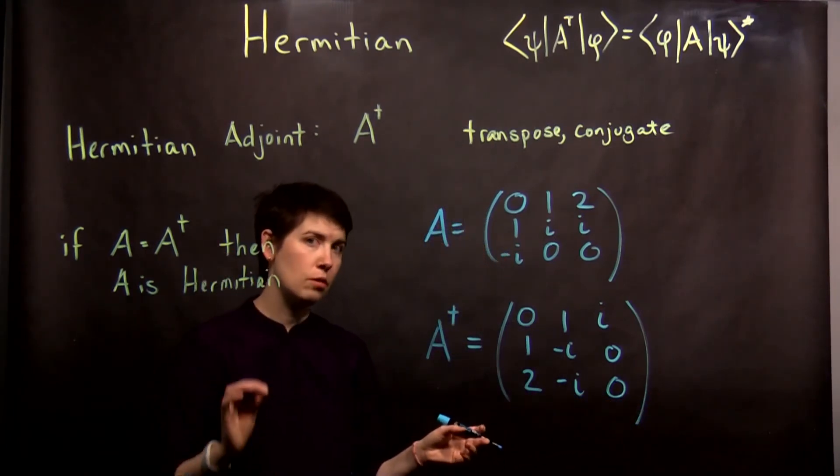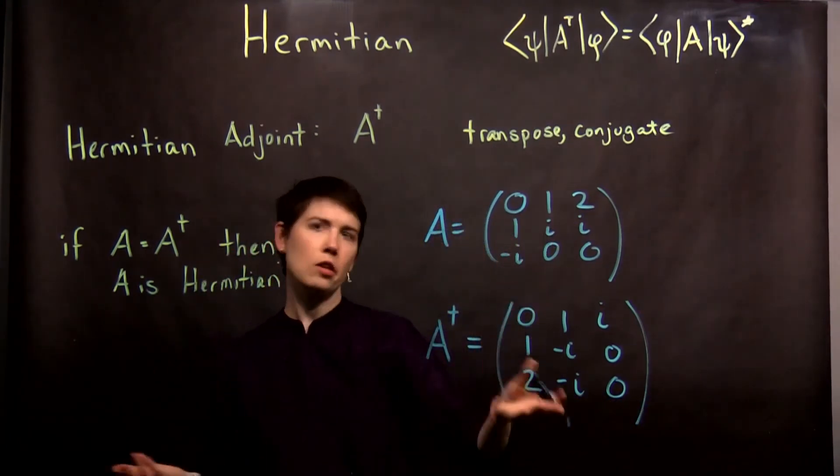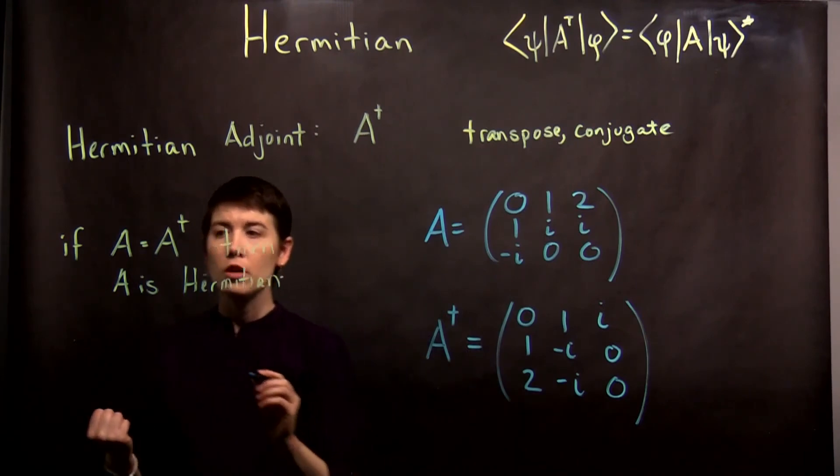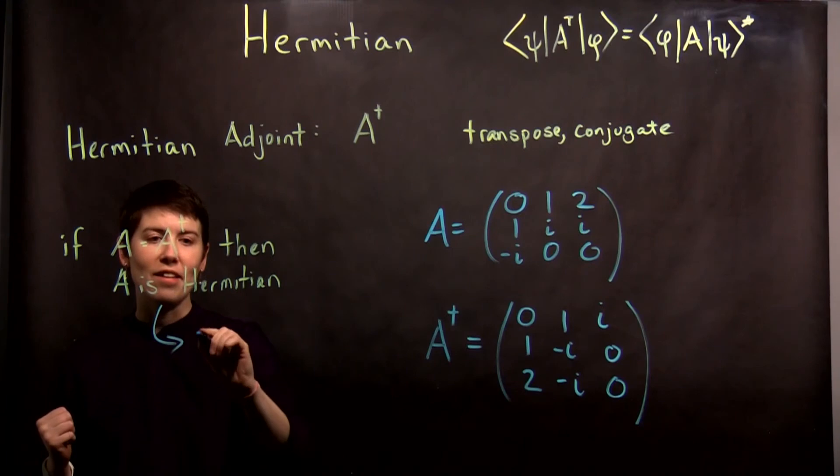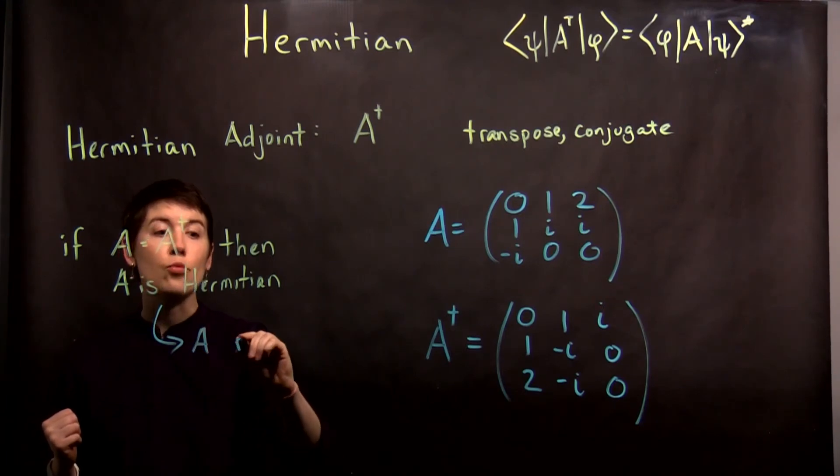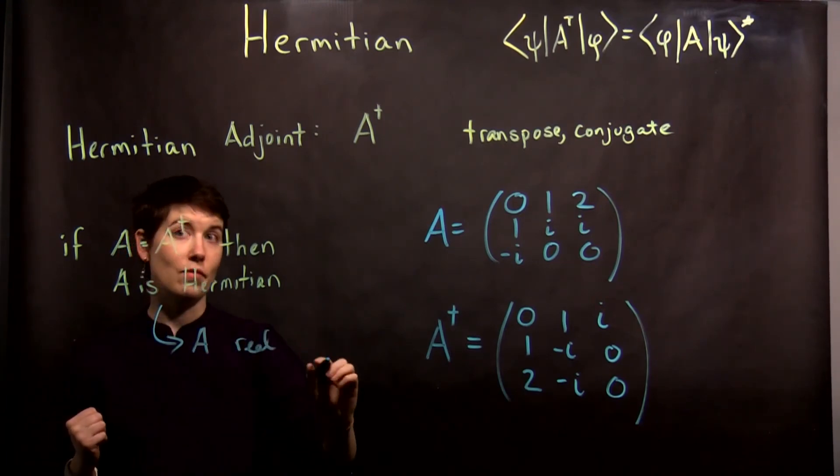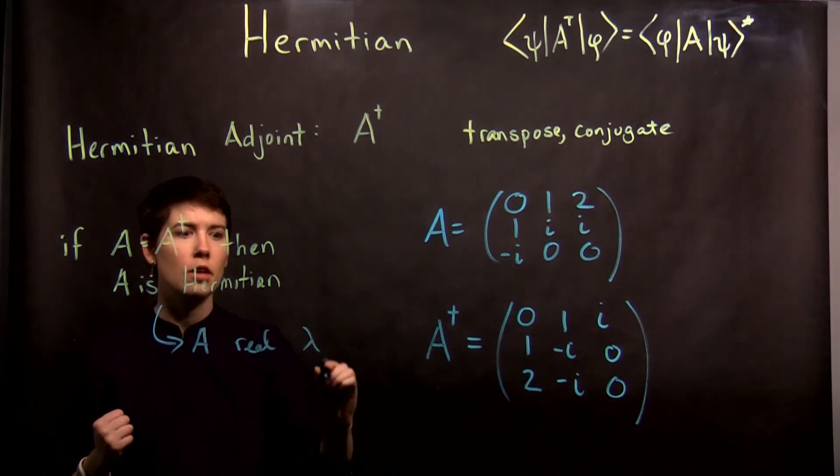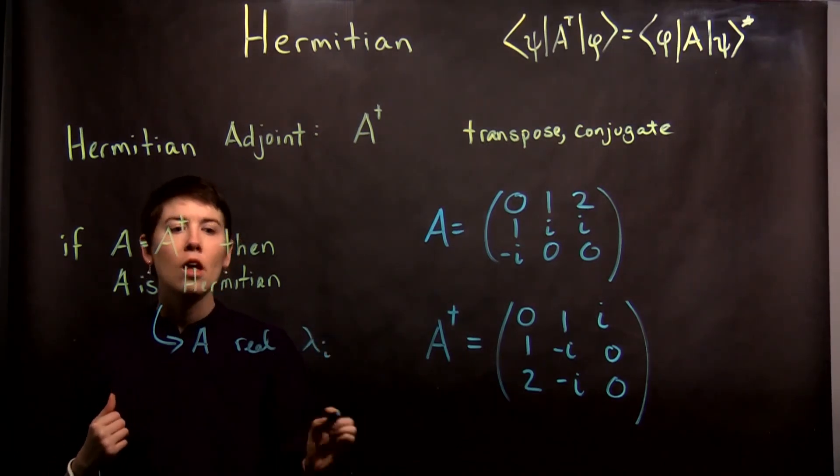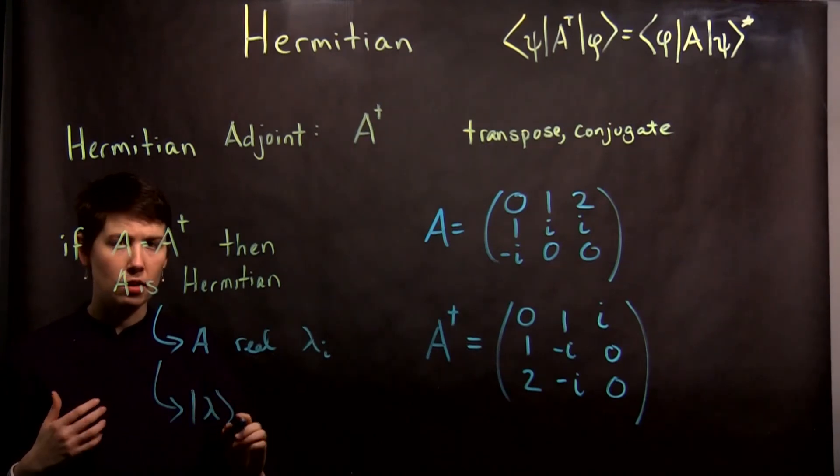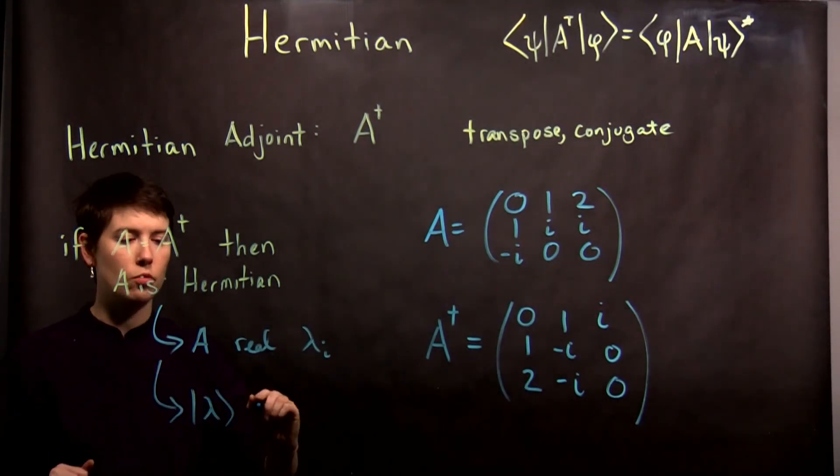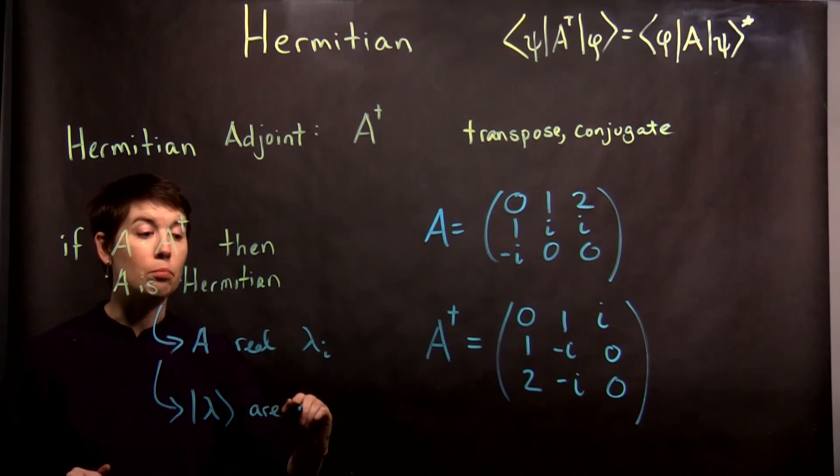But there's a couple of physical things that result. So just asking are these equal or not, that's mathematical. So if A is Hermitian, then A has real eigenvalues. So I'm going to use lambda, meaning just eigenvalues. And then the eigenvectors, so our set of eigenvectors, which I can denote this way, are going to be complete.